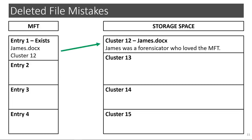Here we see a very oversimplified example where the first entry in the MFT is marked as allocated or existing and contains the metadata for a file titled James.docx. The MFT entry indicates that the file exists, or at least starts, at cluster 12. If we go to cluster 12 on the storage space of the hard drive, we can see the beginning of the James.docx file.